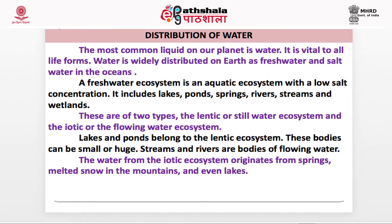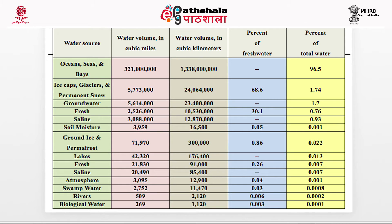The most common liquid on our planet is water, and it is vital to all life forms. Water is widely distributed on earth as fresh water and salt water in the ocean. A freshwater ecosystem has a low salt concentration and includes lakes, ponds, springs, rivers, streams, and wetlands. These are of two types: the lentic or still water ecosystem and the lotic or flowing water ecosystem. Lakes and ponds belong to the lentic ecosystem; streams and rivers are lotic. The lotic ecosystem originates from springs, melted snow in the mountains, and even lakes.